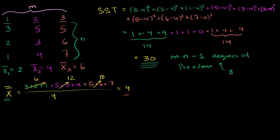Let's calculate the sum of squares within. So we want to see how much of the variation is due to how far each of these data points are from their central tendency — from their respective means. So instead of taking the distance between each data point and the mean of means, I'm going to find the distance between each data point and that group's mean, because we want the total sum of squares between each data point and their respective means.